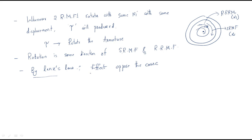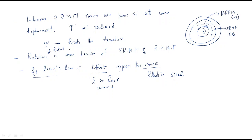By Lenz's law, the effect opposes the cause. The effect here is the current induced in the rotor conductors. The cause is the relative speed between the conductors and the flux. So to decrease the relative speed between the rotor and the flux, the rotation of the rotor is in the same direction as the stator RMF and the rotor RMF.